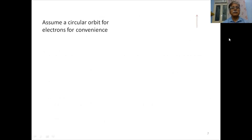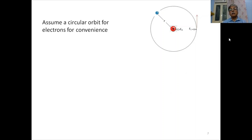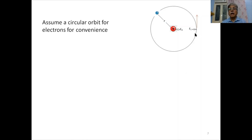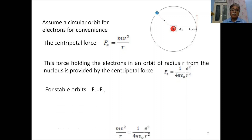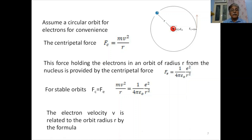Let us assume a circular orbit for electrons. We have the positive nucleus at the center and the electron revolving in an orbit of radius r. The centripetal force acts toward the center and is provided by the electrostatic force of attraction between the positive nucleus and the electron. The electron at any point moves tangent to the circle. So we have: centripetal force mv²/r equals the electrostatic force (1/4πε₀)(e²/r²). According to Newton's second law: mv²/r = (1/4πε₀)(e²/r²).